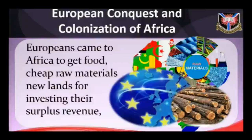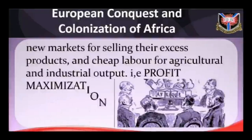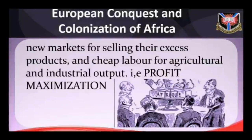The truth is that the white man came to Africa to get food, cheap raw materials, new lands for investing surplus revenue, new markets for selling excess products, and cheap labor for agricultural and industrial output. All these were geared towards one major thing: profit maximization. Frederick Lugard himself wrote in 1923: 'The partition of Africa was, as we all recognize, due primarily to the economic necessity of increasing the supplies of raw materials and food to meet the needs of the industrialized nations of Europe.'